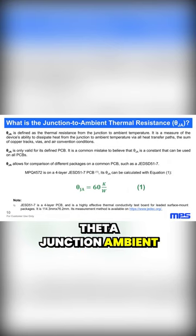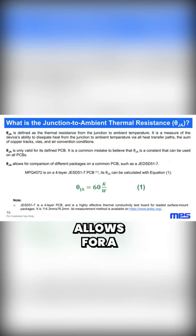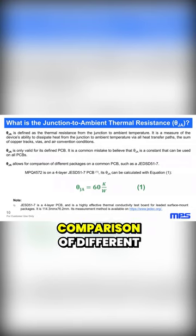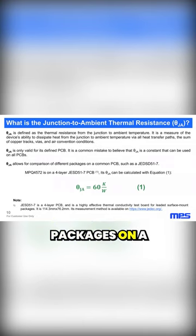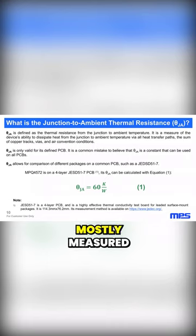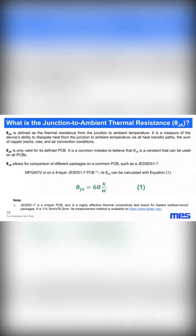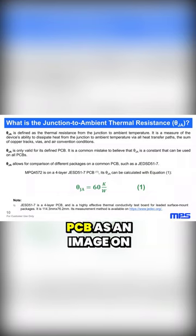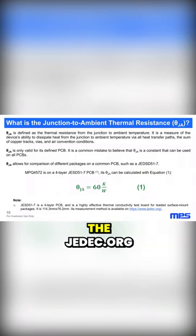Theta junction-to-ambient allows for a comparison of different packages on a common PCB, and is mostly measured on the JESD 51-71. You can find this PCB as an image on the JEDEC.org website.